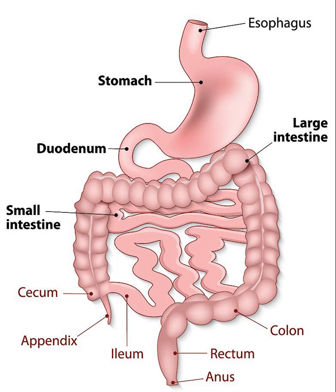Hello friends, this is the anatomy of the large intestine. The large intestine, also known as the large bowel, is the last part of the gastrointestinal tract and of the digestive system in tetrapods.